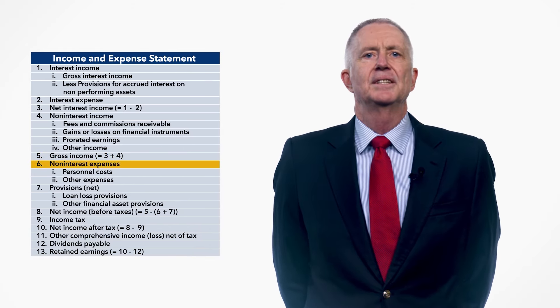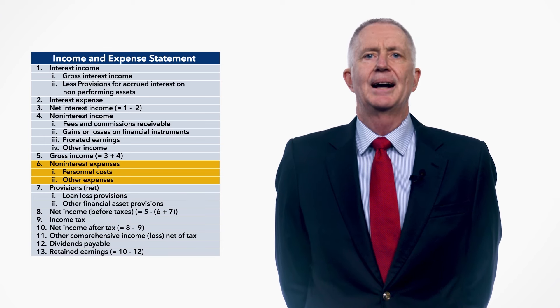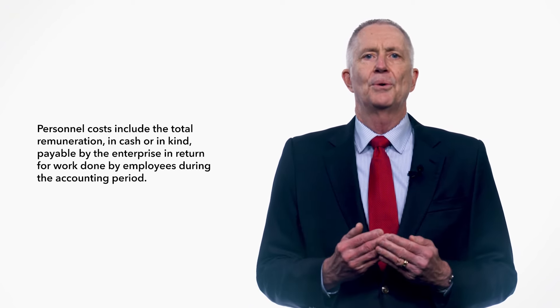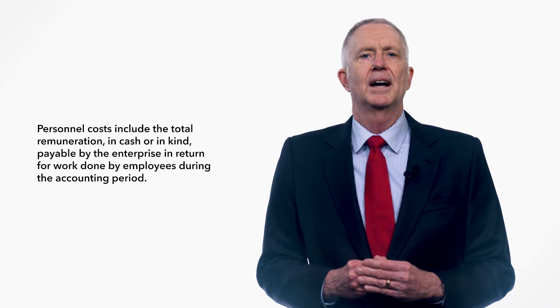Non-interest expenses, line 6, are subdivided into two categories which capture all non-interest expenses except provisions or, in IFRS terms, allowances for loss. These categories are personnel costs and other expenses. Personnel costs include the total remuneration, in cash or in kind, payable by the enterprise in return for work done by employees during the accounting period. Personnel costs are typically one of the largest expense categories and are used in the calculation of earnings and profitability FSIs. All other non-personnel related expenses, including extraordinary expenses, are recorded in other expenses.